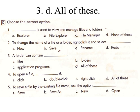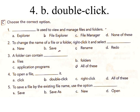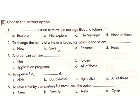3. A folder can contain — a) Files, b) Folders, c) Application programs, d) All of these. Answer: d) All of these. 4. To open a file, you — a) Click, b) Double-click, c) Right-click, d) All of these. Answer: b) Double-click. 5. To save a file by the existing file name, use the option — a) Save, b) Save As, c) New, d) Open.